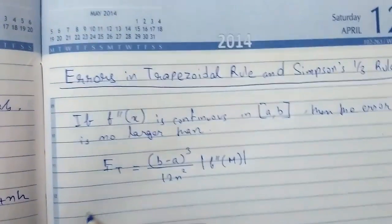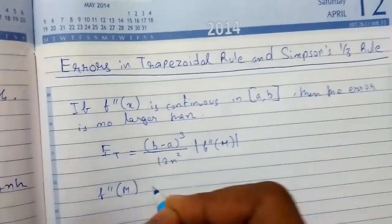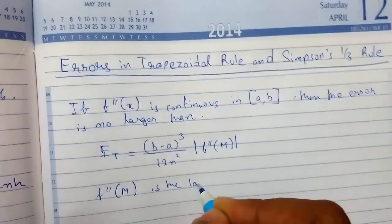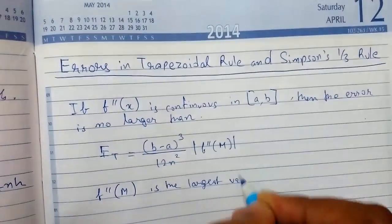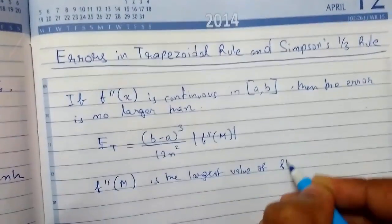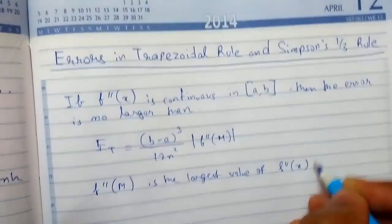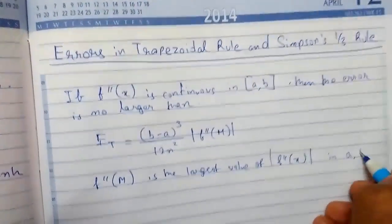where this is the largest value of |f''(x)| in that region [a,b].